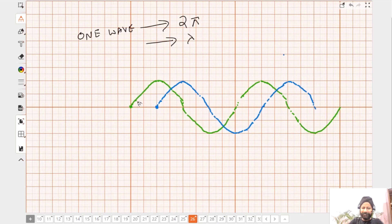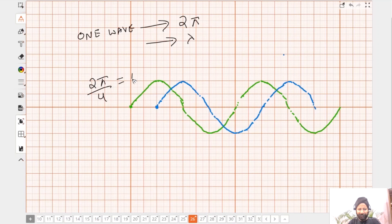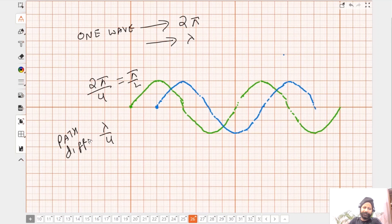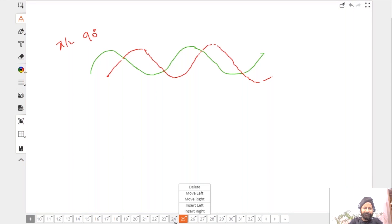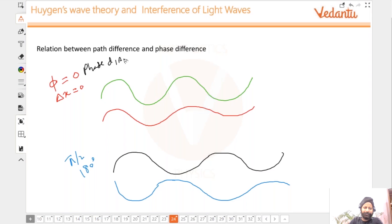So let's try to do some unitary method, just unitary method that you studied in grade seventh or eight. One wave is two pi or lambda right, one wave is you can say lambda or two pi. So one wave is my path difference, one wave is my phase difference. So phase difference is zero. Same thing goes here, so phase difference is zero, path difference is also zero.